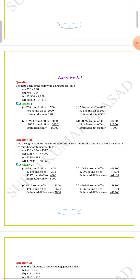Then question C: 7,904 rounds off to 8,000 as it is nearest. The next number, 2,888, rounds off to 3,000. The estimated sum equals 11,000.